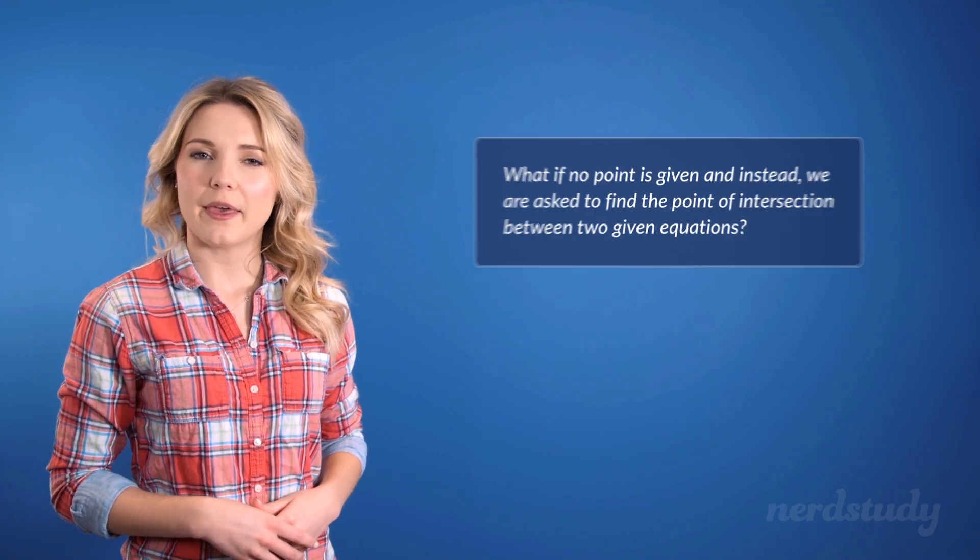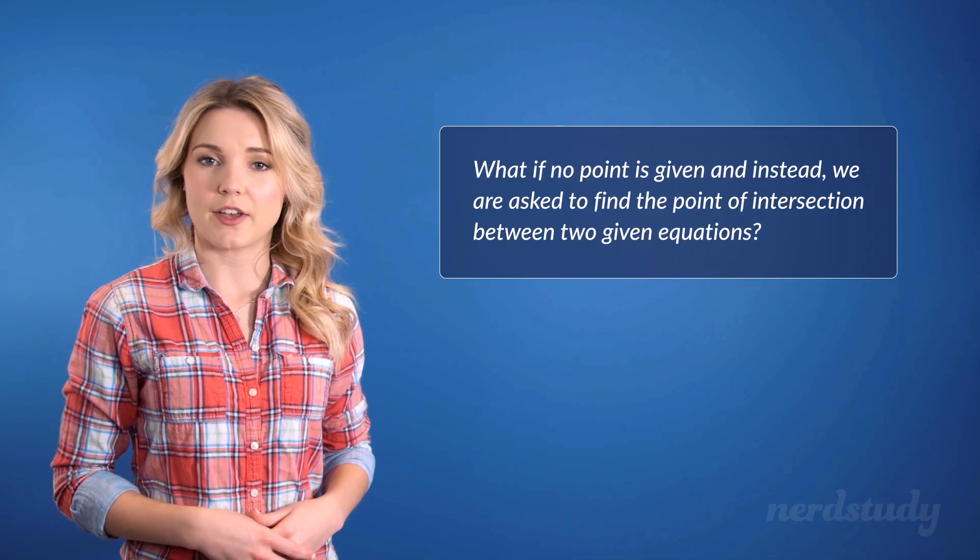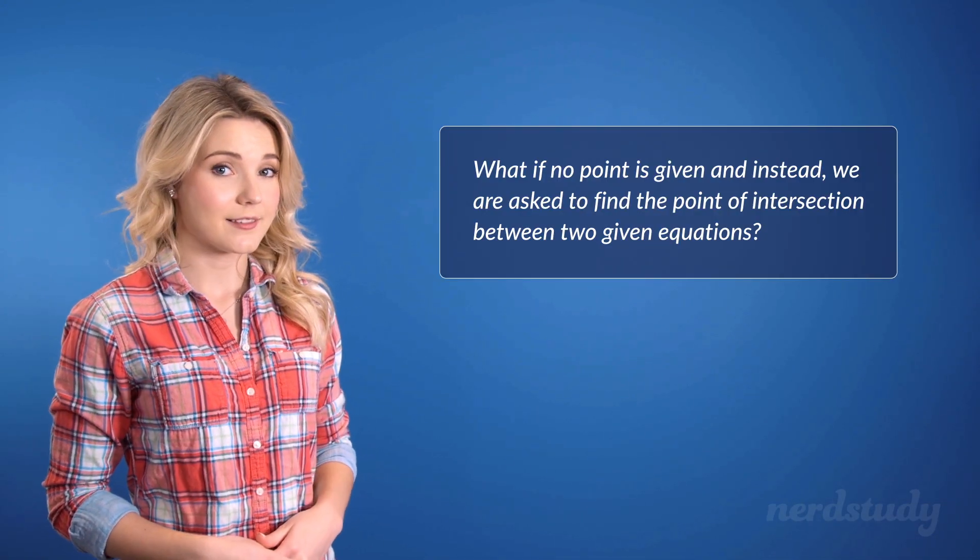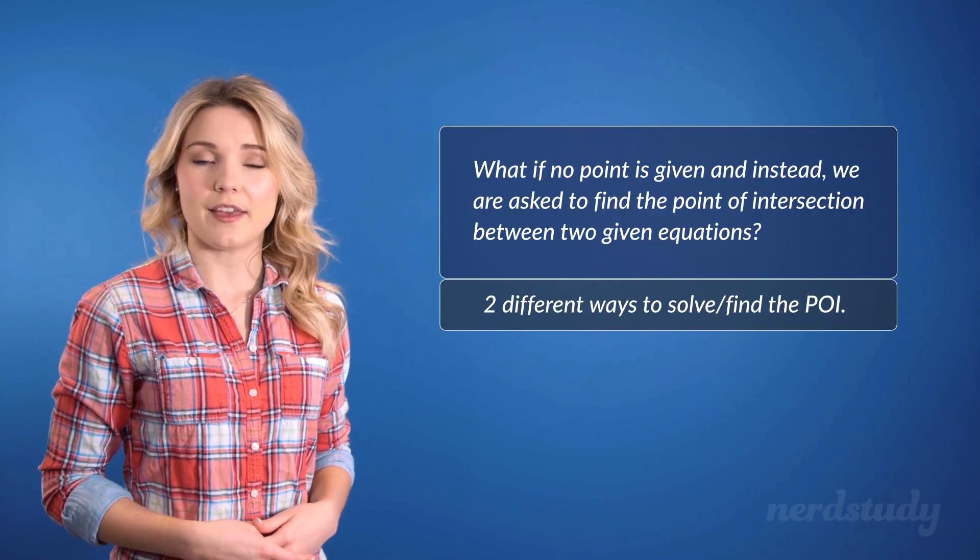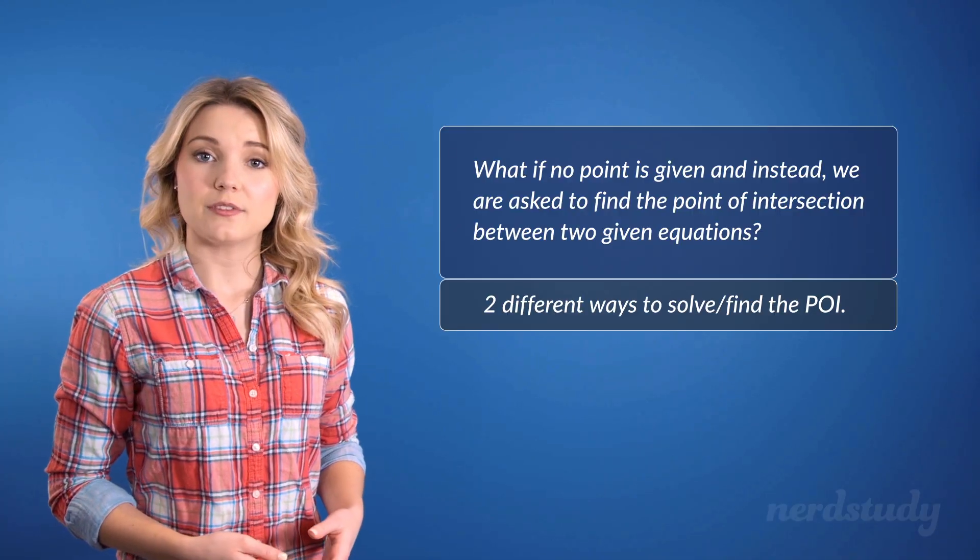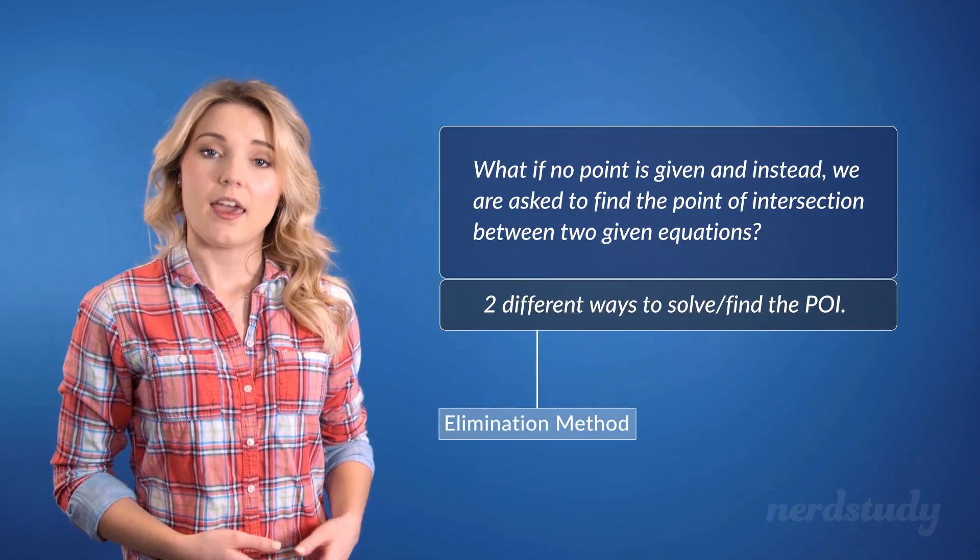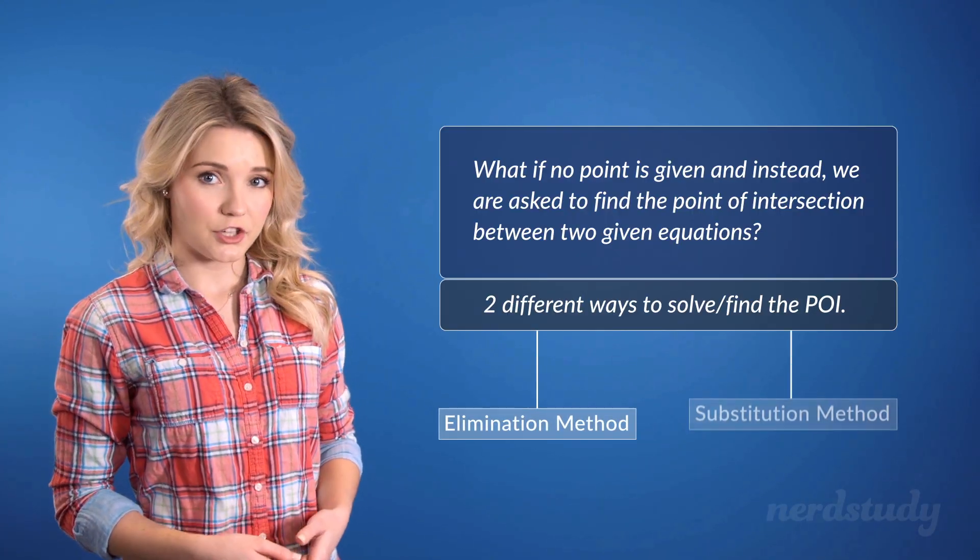But what if we were being asked to find out the point of intersection between two lines? How would we be able to find it? Well, there are two different ways to do this. One method uses the elimination method, and the other uses the substitution method.